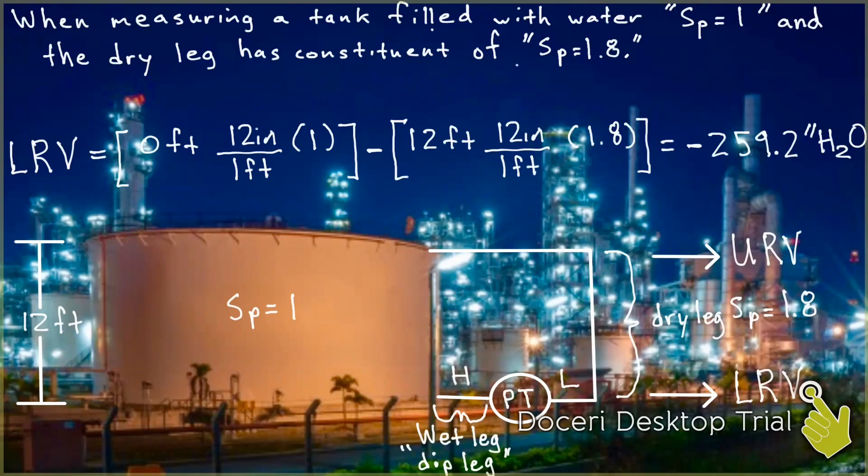The lower range value, how I like to always say it, is the bottom minus the top. And it's not just the bottom, it's the bottom of the tank, and the top is the top of the constituent.